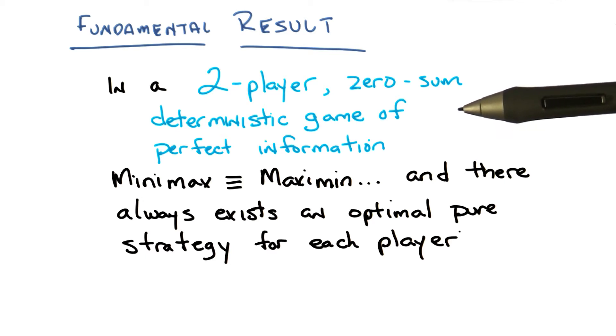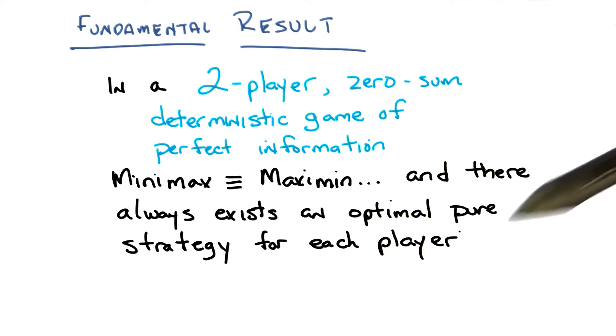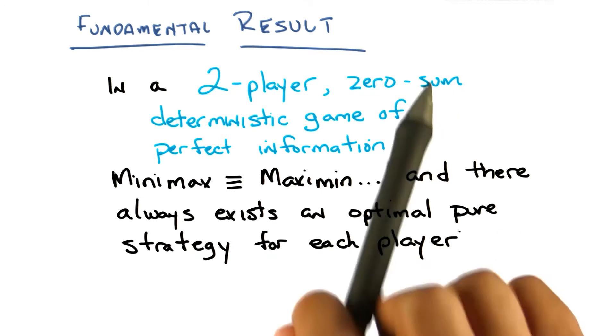All right, you told us what minimax was, but you didn't tell us what maximin was. Well, maximin is like minimax, except the other way around. So one side is trying to minimize the maximum and the other side is trying to maximize the minimum. It's exactly what we described before. It just depends upon whether you're looking at it from A's point of view or B's point of view.